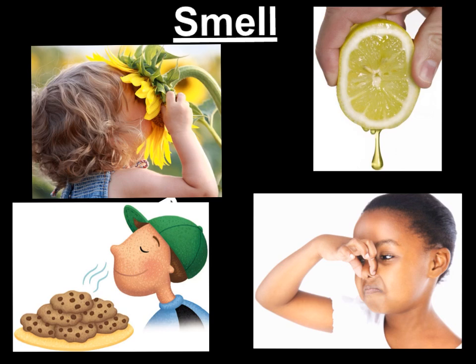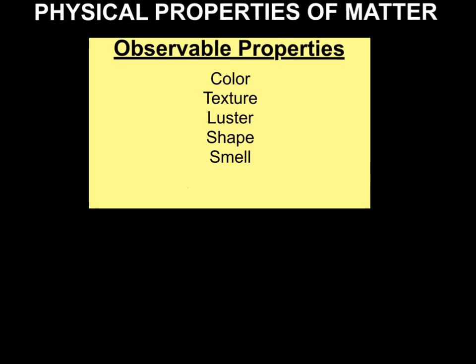Next is smell. It might smell like a flower, or clean like a lemon, or like fresh baked cookies — or it might be a smell that isn't that pleasant. Add smell to our notes about observable properties of matter. Spelling still counts.